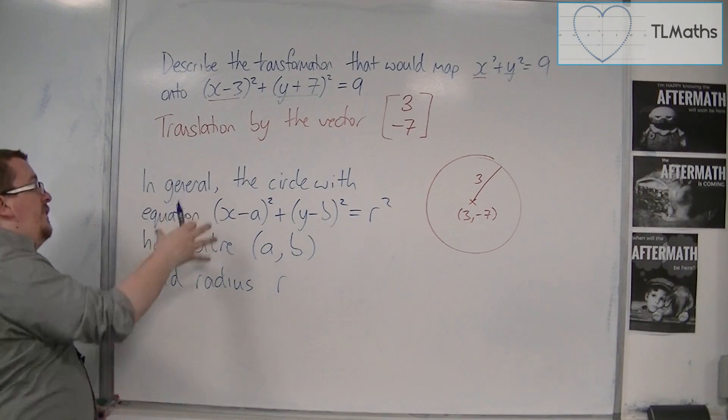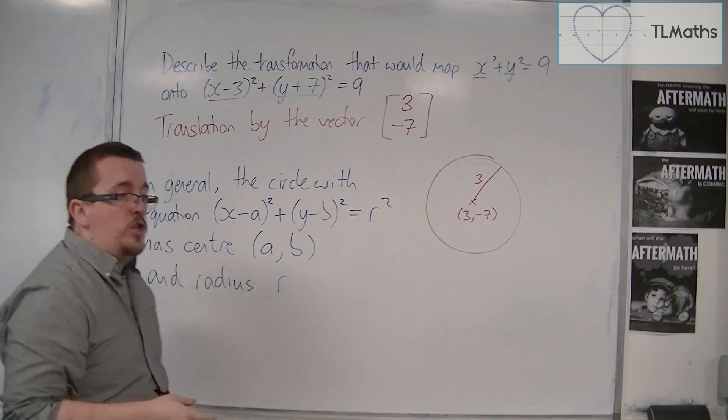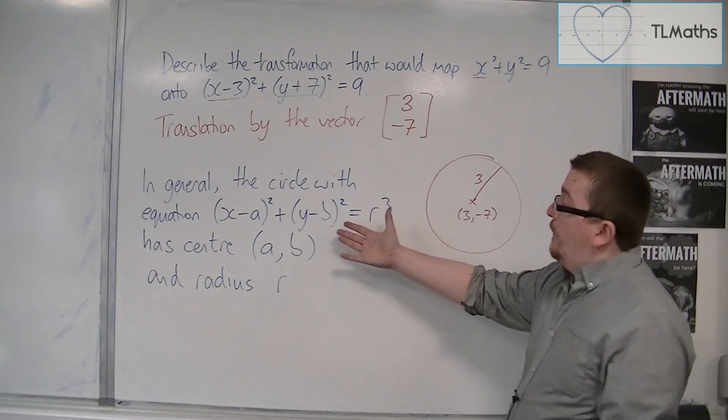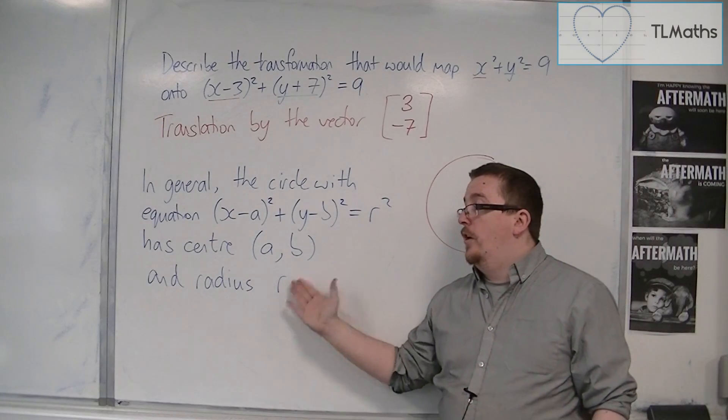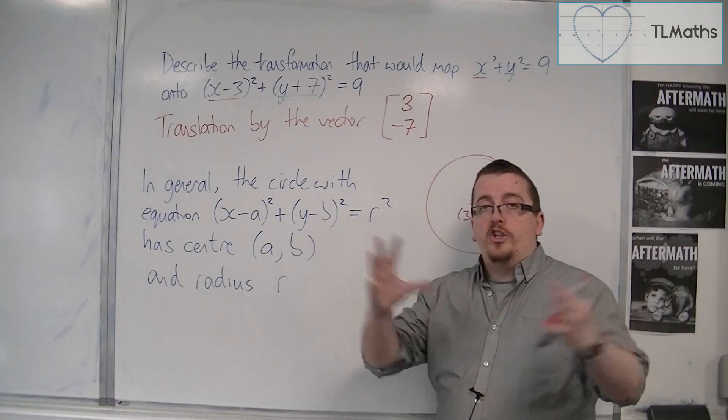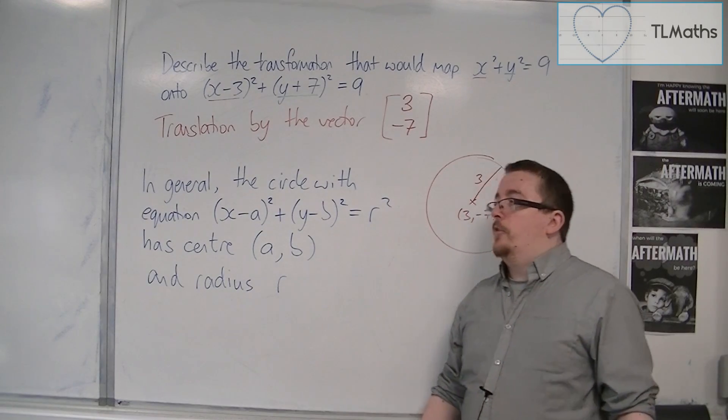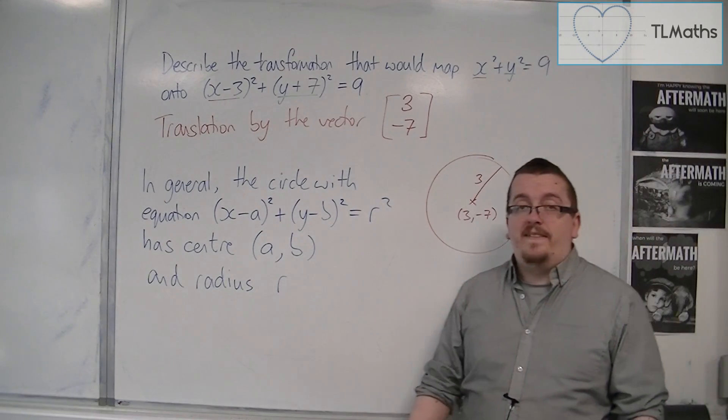So this is how we can now identify the equation of a circle. And we've generalized it, so it doesn't matter where the center is, where it's positioned, or how large it is. It's the size of its radius. So we're going to see another example of this in the next video.